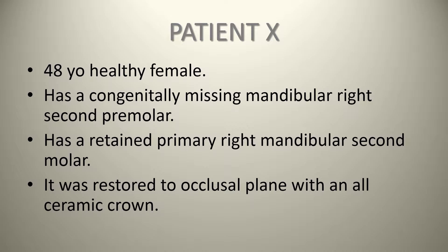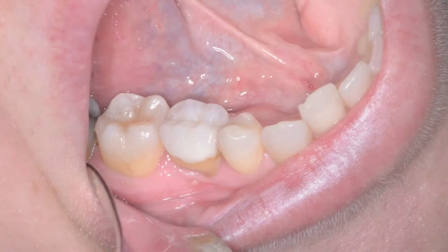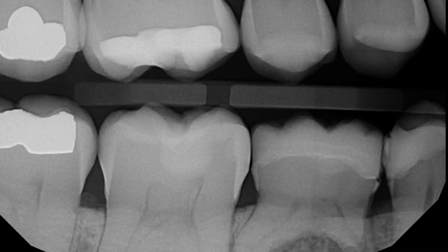The retained molar was restored to the occlusal plane previously, probably around age 20, with an all-ceramic crown. In this photograph you can see the restored primary second molar in position. This functioned for the patient for a number of years. Unfortunately, with some restorations, this patient was subject to root resorption of this tooth and it became mobile.